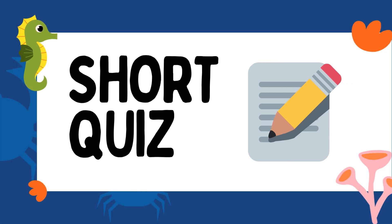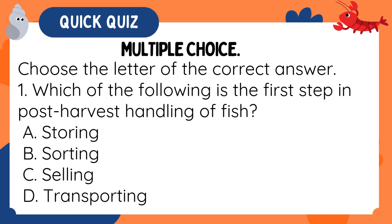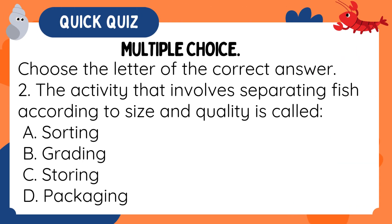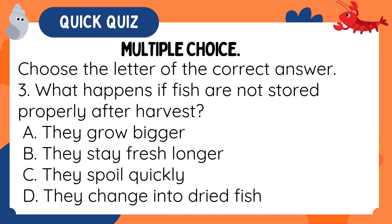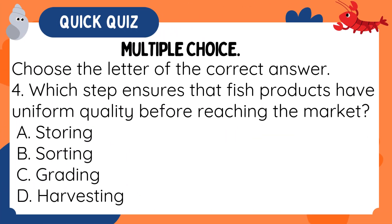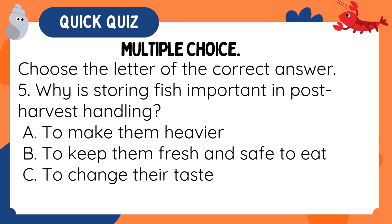Short quiz — Multiple choice: Choose the letter of the correct answer. 1. Which of the following is the first step in post-harvest handling of fish? A. Storing B. Sorting C. Selling D. Transporting. 2. The activity that involves separating fish according to size and quality is called: A. Sorting B. Grading C. Storing D. Packaging. 3. What happens if fish are not stored properly after harvest? A. They grow bigger B. They stay fresh longer C. They spoil quickly D. They change into dried fish. 4. Which step ensures that fish products have uniform quality before reaching the market? A. Storing B. Sorting C. Grading D. Harvesting. 5. Why is storing fish important in post-harvest handling? A. To make them heavier B. To keep them fresh and safe to eat C. To change their taste D. To make fishing easier.